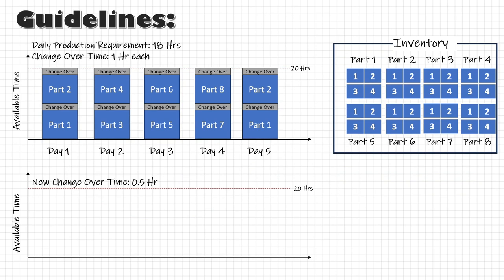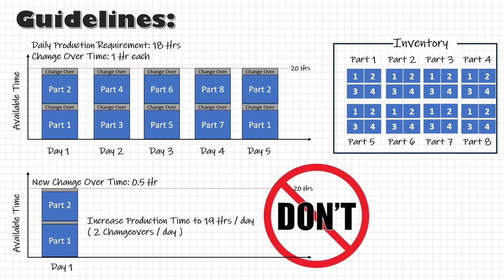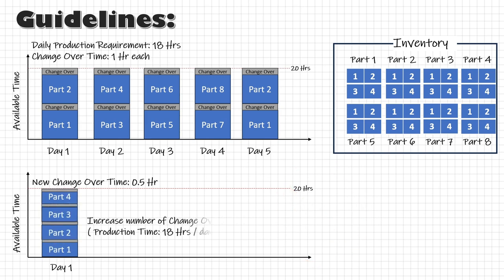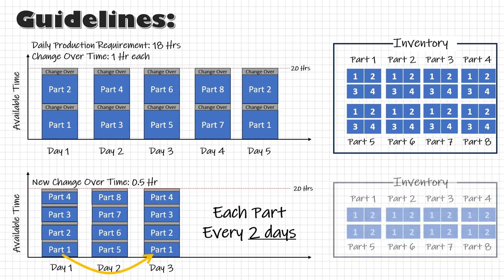If we reduce the changeover time to 30 minutes, we only need 1 hour for 2 changeovers. The first instinct might be to increase production to 19 hours a day — don't do that, it will only result in overproduction. Instead, we should target increasing changeovers to 4 times a day and produce smaller lots. With this improved capacity, 4 different types of parts can be produced each day, meaning we can produce every part every 2 days — and thus we need only 2 days of inventory per model. By reducing the production cycle, we can drastically reduce inventory.